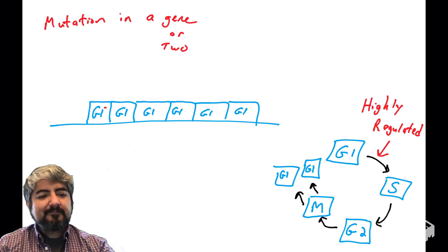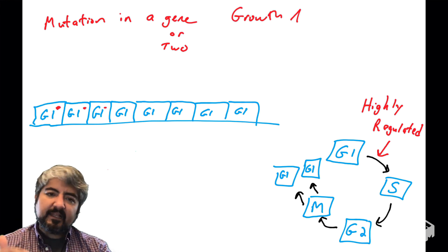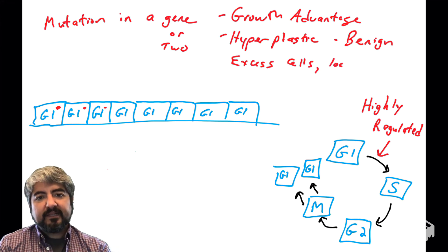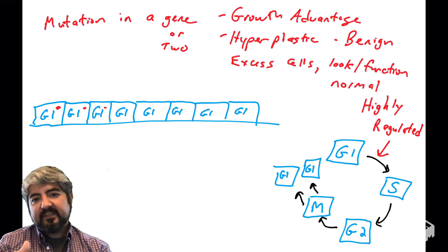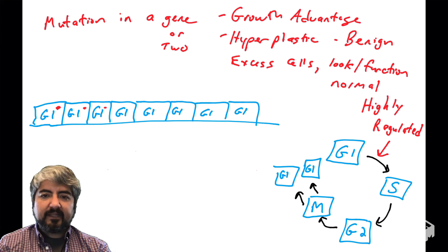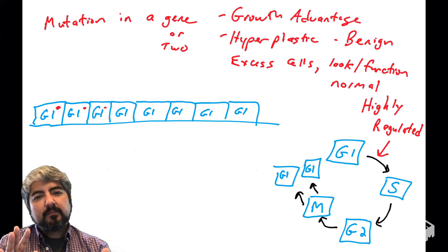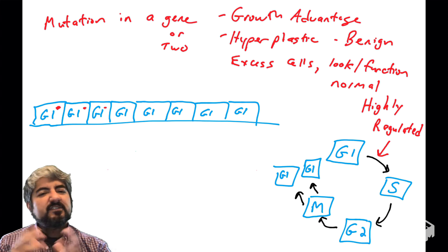Is that cancer? Typically, it's not cancer, but these cells will go through the cell cycle and have a little bit of advantage over their neighboring cells. So you have more of these cells. They go through the cell cycle more frequently, but they still function. They still look normal under the microscope, but there's just more of them.